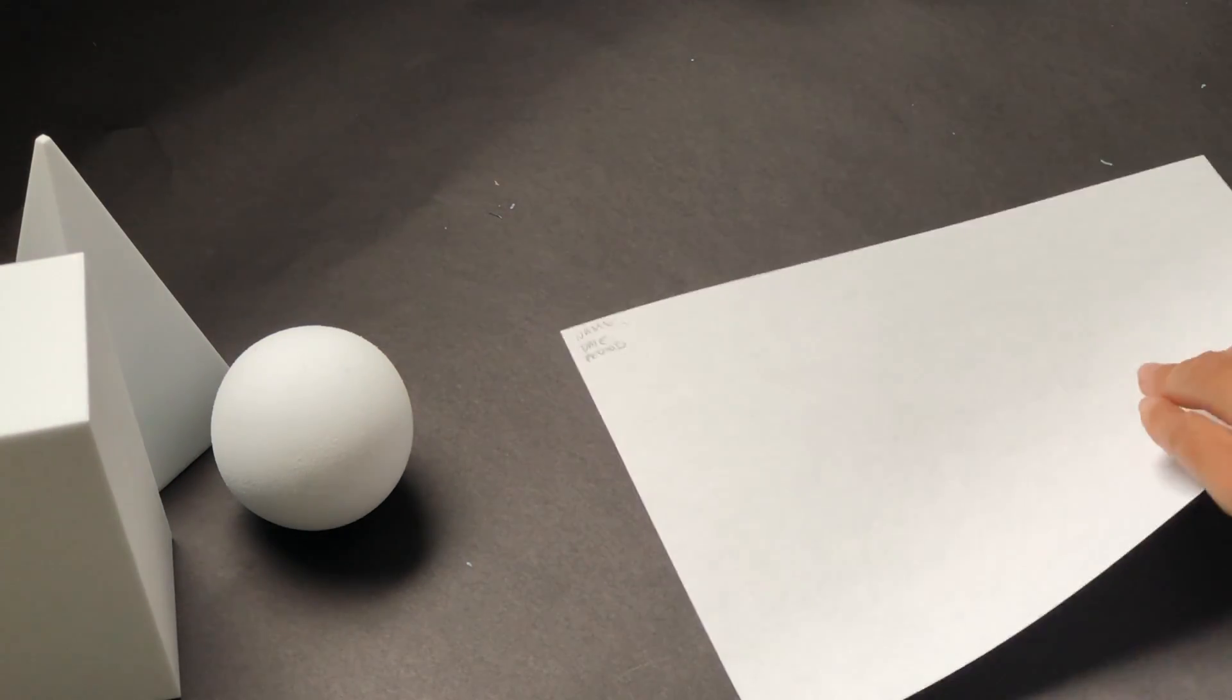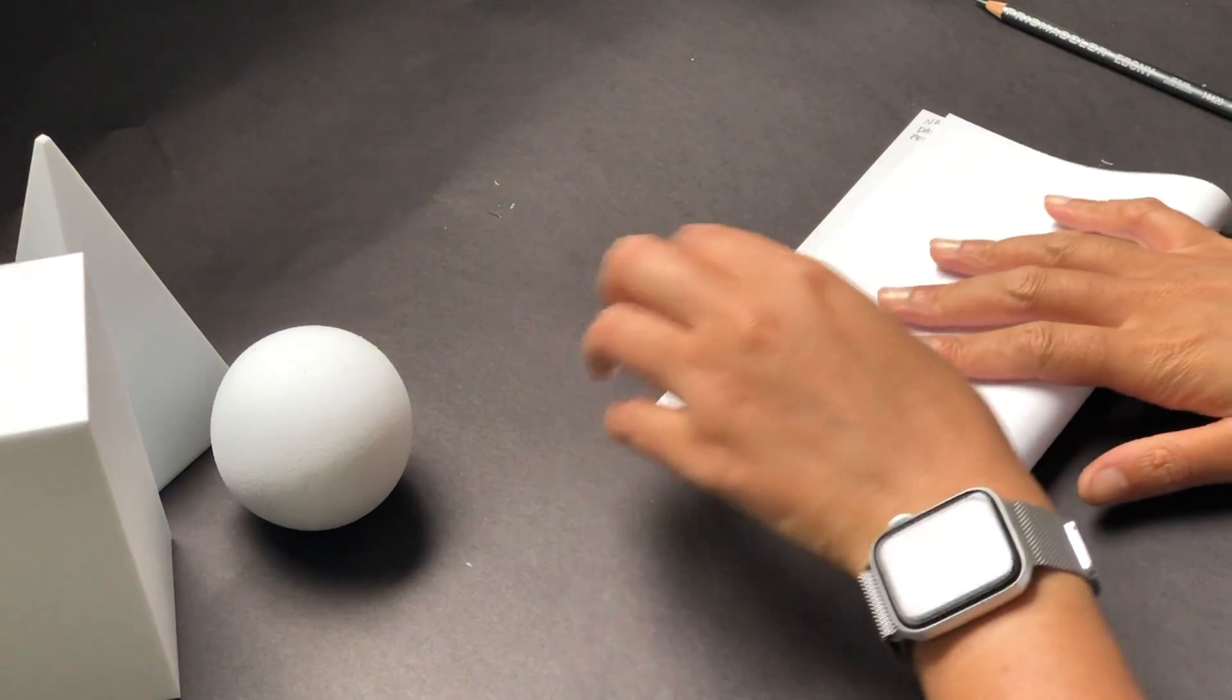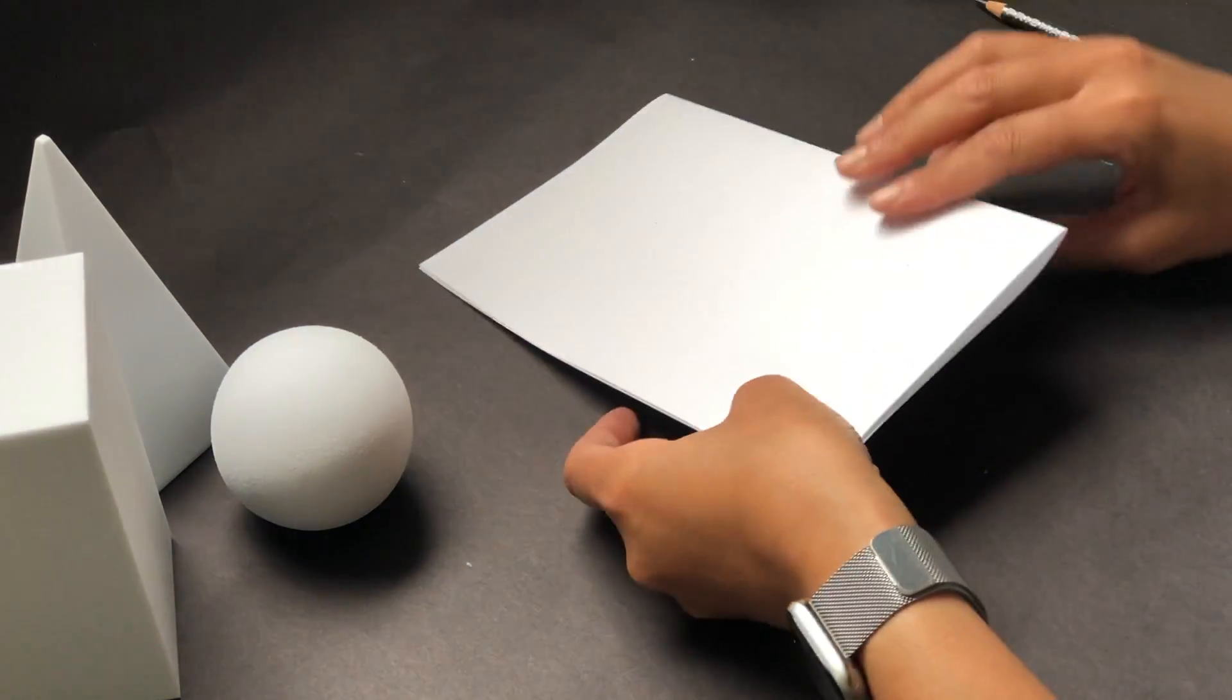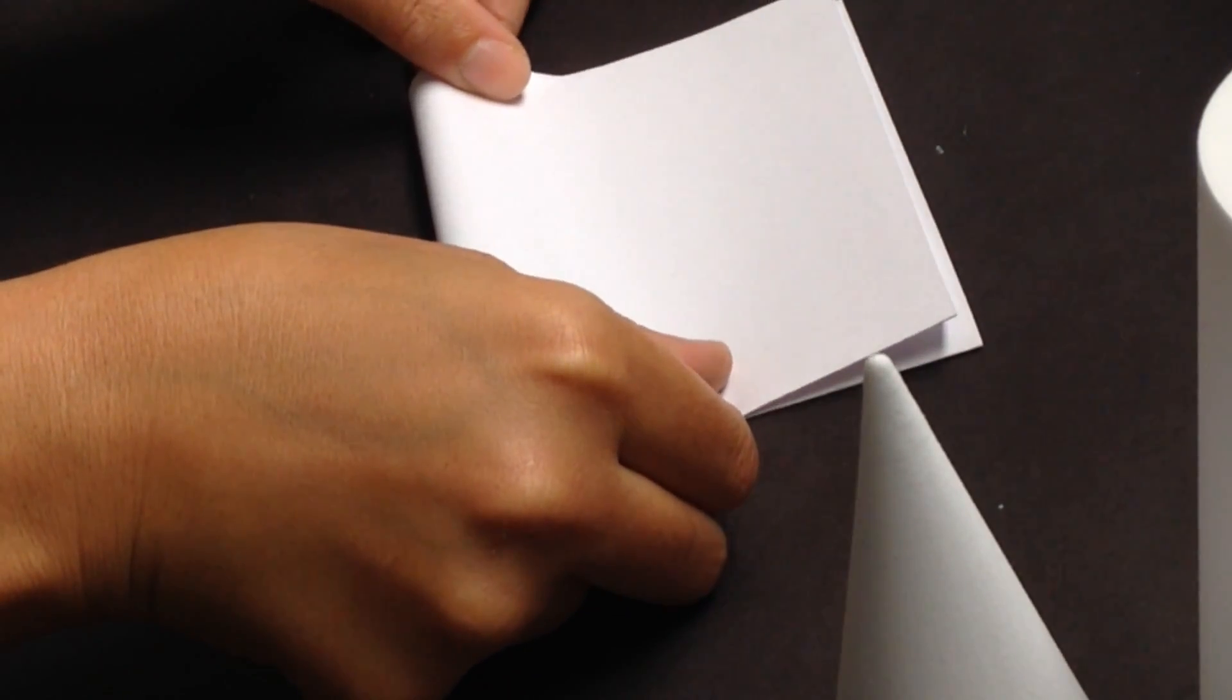Once your paper is labeled with your name, date, and period, fold your paper in half and then fold your paper in half again. Do this now.